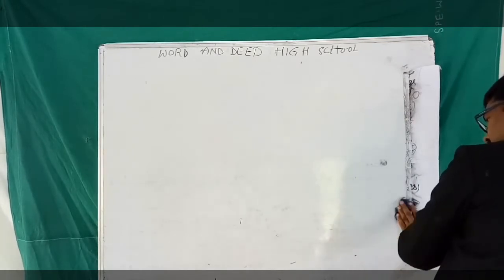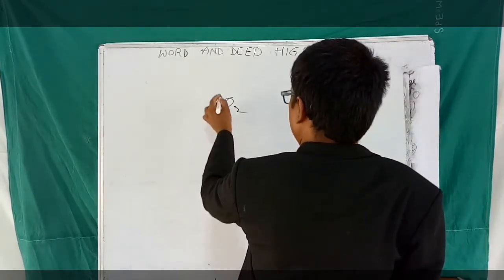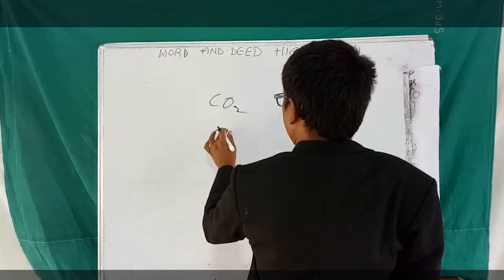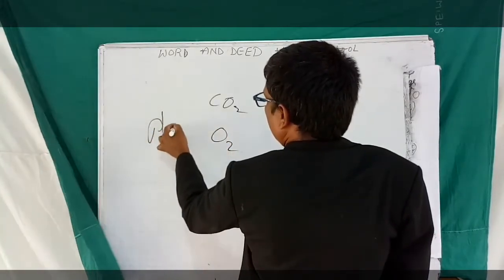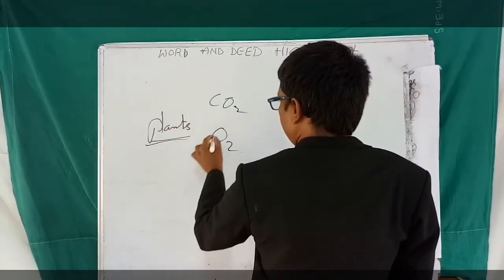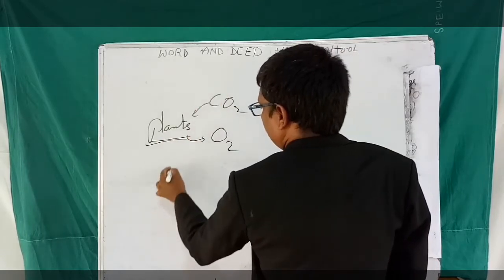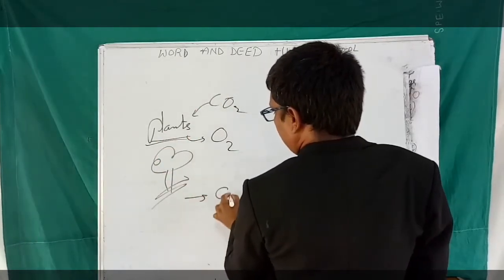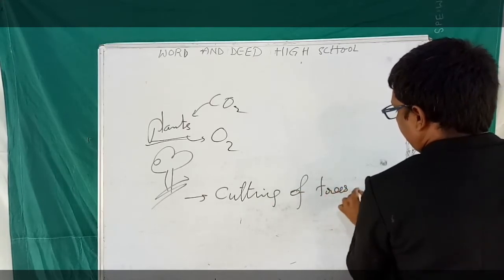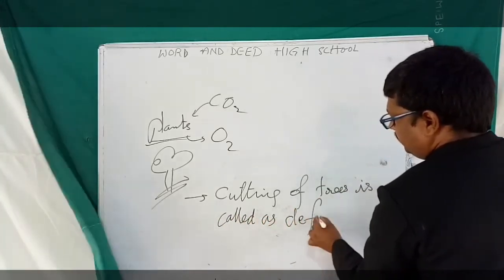Plants actually take carbon dioxide and give oxygen. In the process, plants are the main things playing a role in taking carbon dioxide and giving oxygen. If we cut down the plants — cutting of trees is called deforestation.